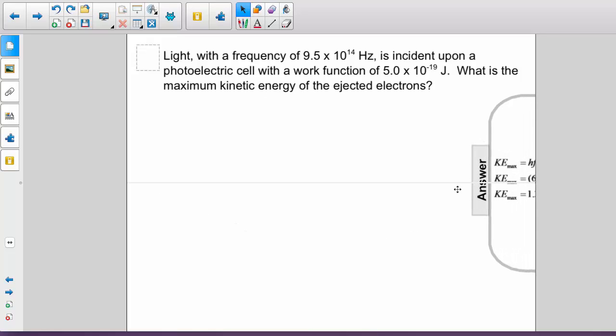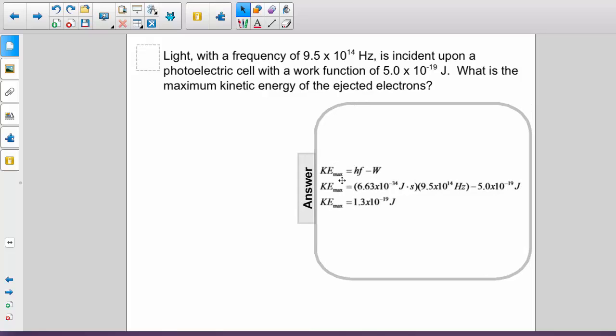Again, we're going to use Einstein's relationship that the maximum kinetic energy of an ejected electron will be photon energy minus the work function.